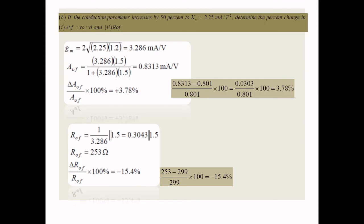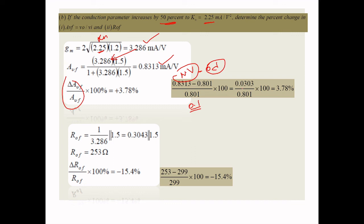For the second problem, when the conduction parameter KN is increased by 50% to KN = 2.25, the new GM = 2√(2.25 × 1.2) = 3.286 mA/V. The new AVF = GM·RS / (1 + GM·RS) = 0.8313. The percentage change in transfer function = (new value − old value) / old value × 100 = (0.8313 − 0.801) / 0.801 × 100 = 3.78%.